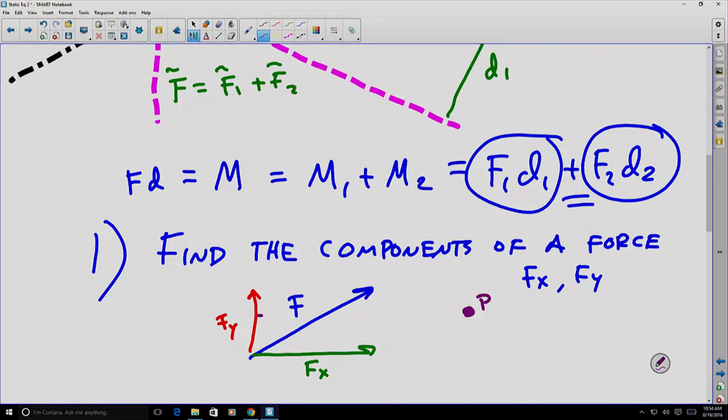What we can do is we can look and say, okay, well, there is a distance. We'll call this DX, a distance X from the point, from that Y component. And there is a DY, a distance from the X axis there.